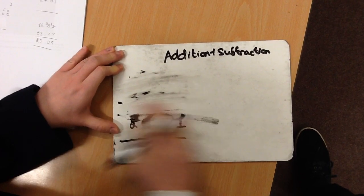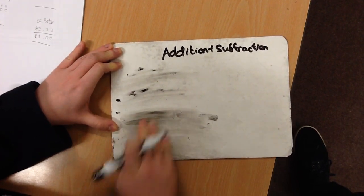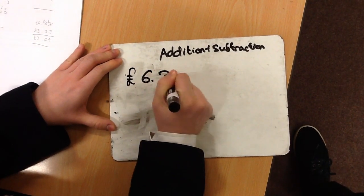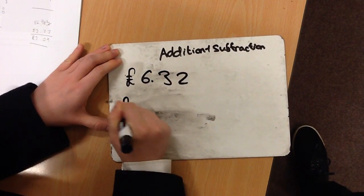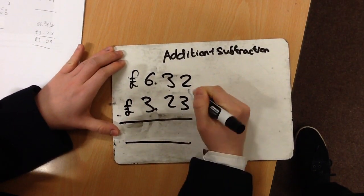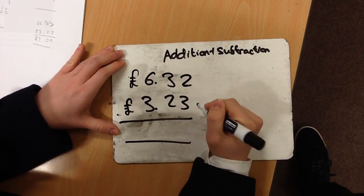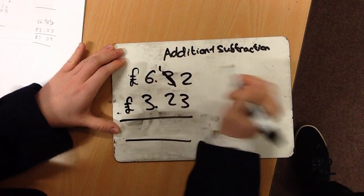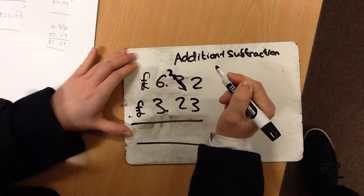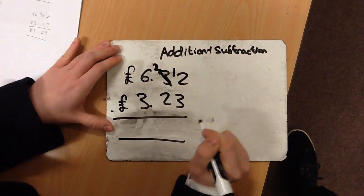Now then, this is the last sum we will do today and this does exchange. So, £6.32 and £3.23. As you can see, we can't do £2 take away £3. So, we need to borrow one from £30. So, £30 then becomes £20. £2 then becomes £12.